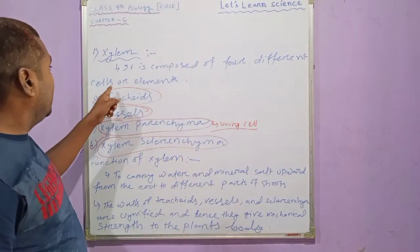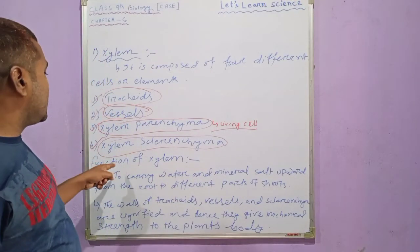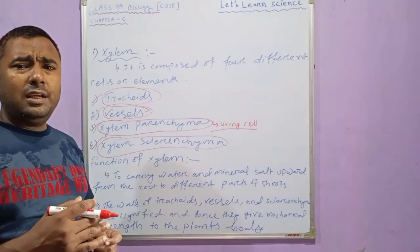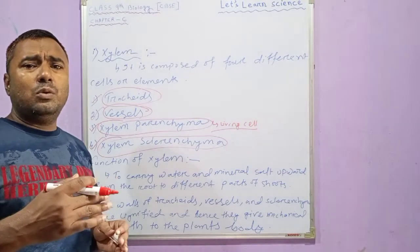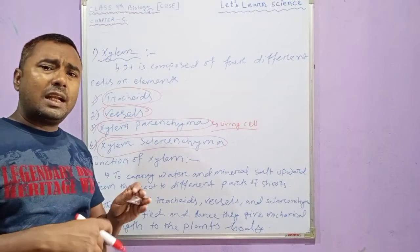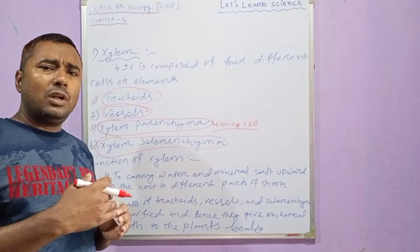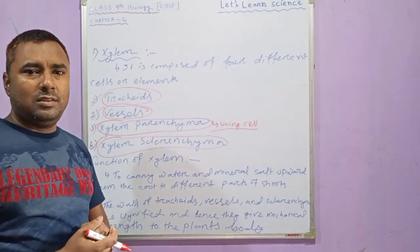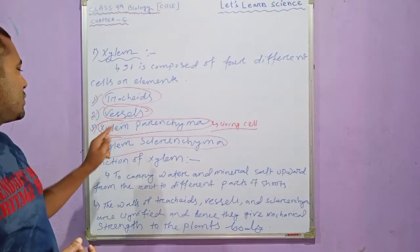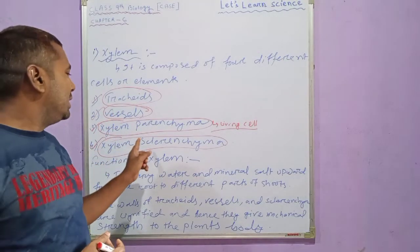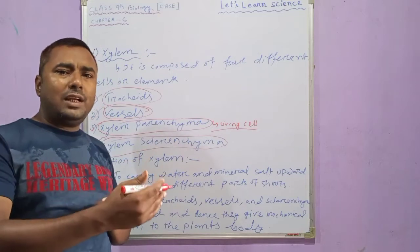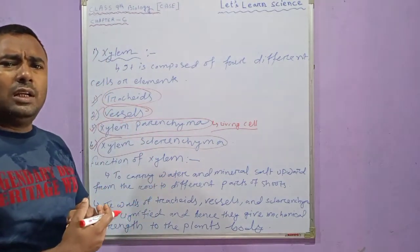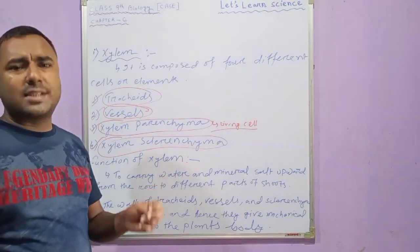The other three — tracheids, vessels, and xylem fibers — are dead cells. They have a lignified cell wall, meaning their cell walls are strengthened by lignin, making them dead cells. Xylem parenchyma is the only living cell in xylem.